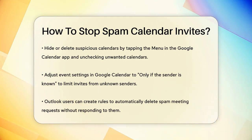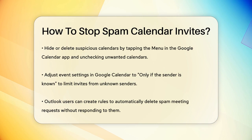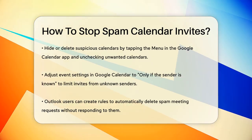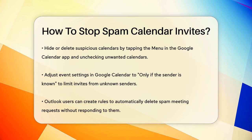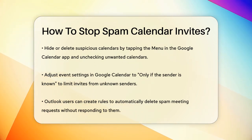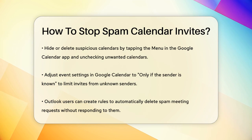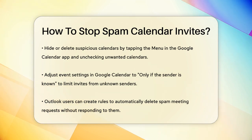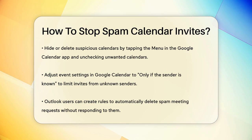For managing invites from unknown senders, you can adjust your event settings. In Google Calendar, go to Settings, then Event Settings, and select 'Only if the sender is known.' This way, events will only be added to your calendar if the sender is in your contacts or someone you've interacted with before.